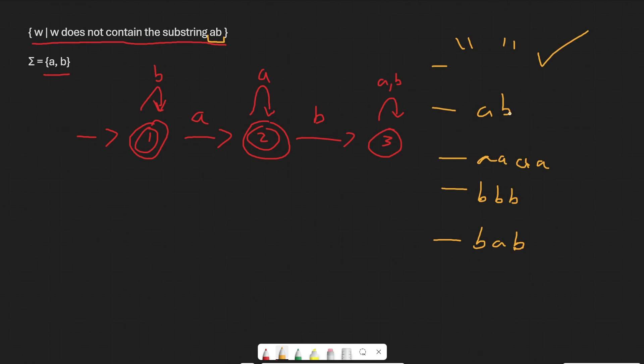Now, what about ab? So let's go to our initial state here, state one. We're going to cross off a, move along to state two. And then on b, we're going to move to state three. So now we're on state three, which is not valid, which makes sense.